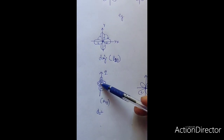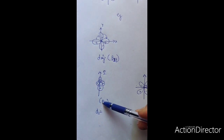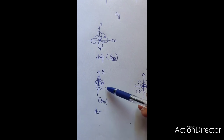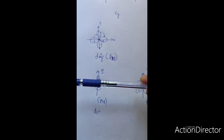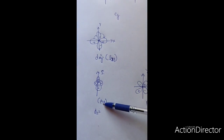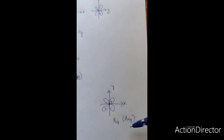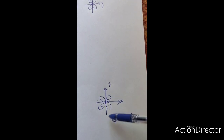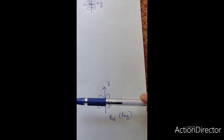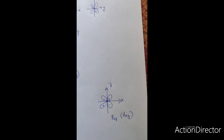For dz², if we rotate it through the z-direction, it gives the same orientation, so its name is A. And 1 means if we cut it through the principal axis, we get equal parts which are mirror images of each other — so its name is A1G: A means symmetric with respect to axis of symmetry, 1 means symmetric with respect to plane of symmetry. For dxy, if we rotate through the z-axis, we do not get a similar orientation — so it is B. And it has no plane of symmetry, so its name is B2G.